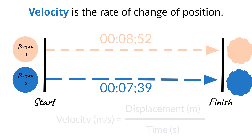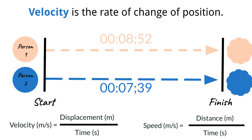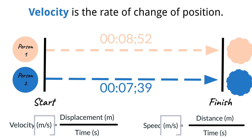However, do not confuse velocity and speed. Speed is a scalar quantity that measures the distance traveled over a period of time. The difference is that speed uses the distance traveled in its calculation, while velocity only uses displacement. We have already discussed the difference between distance and displacement. Note, however, that speed and velocity will use the same derived unit of meters per second, and that is often where the confusion can stem from.